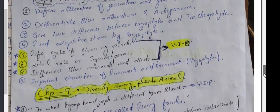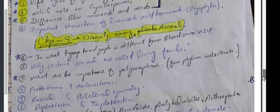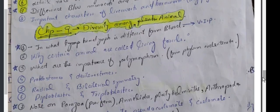Chapter 9 questions: In what way is hemolymph different from blood? Why are certain animals called living fossils? What are the importance of polymorphism? Proterostomes and deuterostomes differences, mostly. Radial and bilateral symmetry. Diploblastic and triploblastic differences. Question comes.